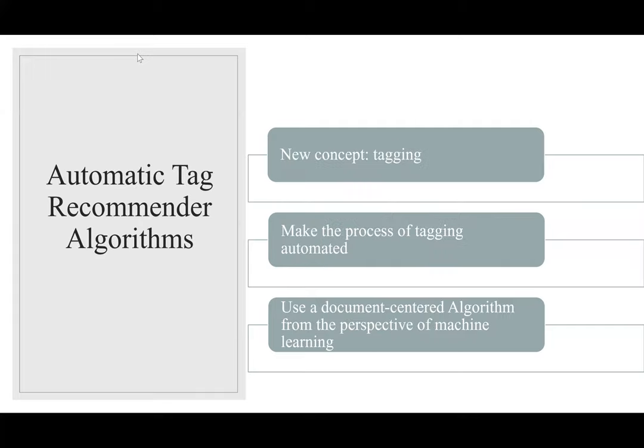Let's come to the automatic tag recommendation systems. With the emergence of web 2.0 and sophisticated social networks, a new concept called tagging came to the forefront. Tagging is the operation of linking related user-defined keywords to documents, images, or videos. It can help users better organize and share connections of things they are interested in. The authors focus on automating the tagging process from the perspective of machine learning. Tag recommendation algorithms can be classified into two kinds: user-centered and document-centered. Since it is much harder to obtain user data than document data, the authors prefer using a document-centered algorithm.